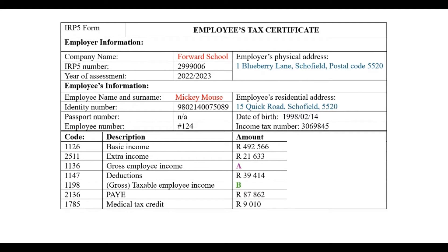This is an example of an IRP-5 form. Since it is an example — my little disclaimer — the one in your exam will look different. There will be a different layout, and since it's a different person, these descriptions here could look slightly different, so just keep that in mind. We have the Employers' Information, the Employees' Information, and then a kind of summary of some amounts.